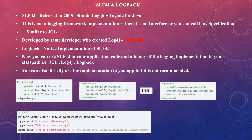To use SLF4J in your application, add the SLF4J API dependency to your classpath. Then add the actual implementation — whether Log4j, JUL, or Logback — to your classpath as well. This is the same concept as JCL: SLF4J is the specification with the classes and interfaces you use in your logging statements, and the implementation is resolved at runtime.